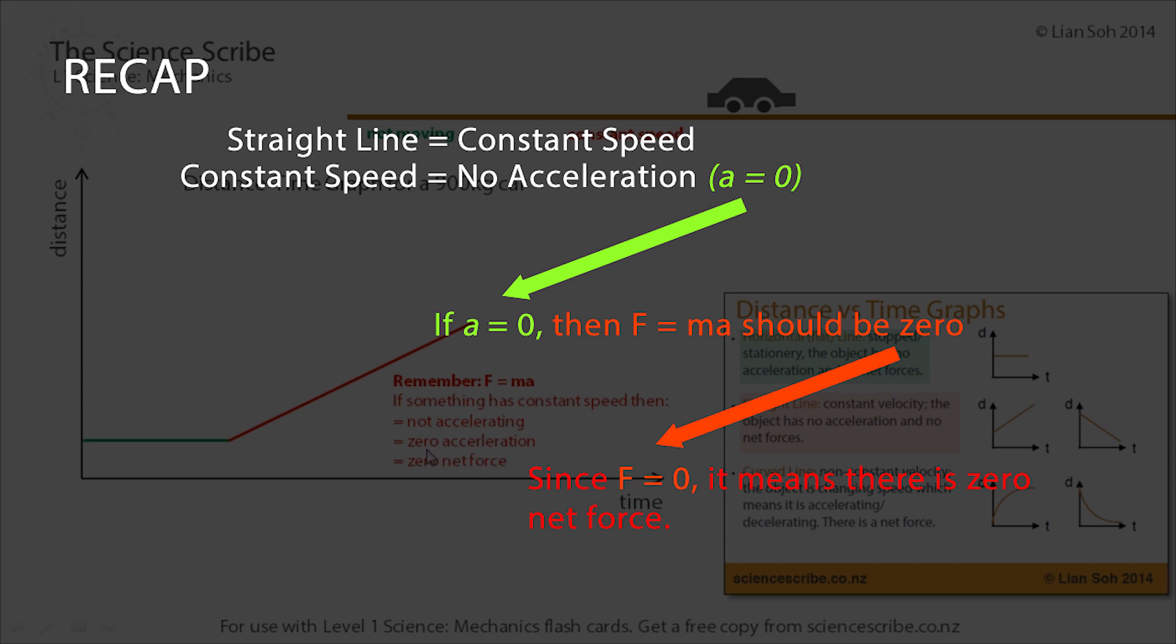Which means there's zero net force because if there's zero acceleration then for this formula f equals ma, the value for a is going to be zero. Anything times zero comes out as zero, so in this case f would actually work out to be zero.